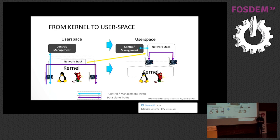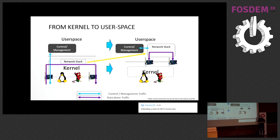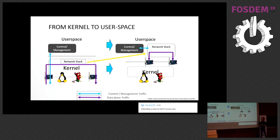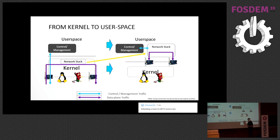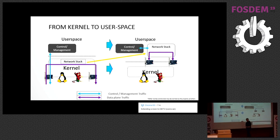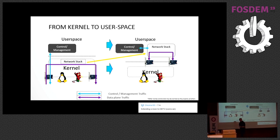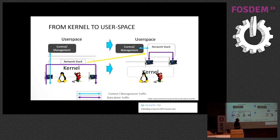Now, why the hell would you do that? The kernel's been around for years. It's really well tested. It's millions of lines of code. It supports every network protocol you could think of. It's a real Swiss army knife of networking. Why would you pull the servicing of the network cards out from something that's so robust and with such longevity, and give it to a user space application?